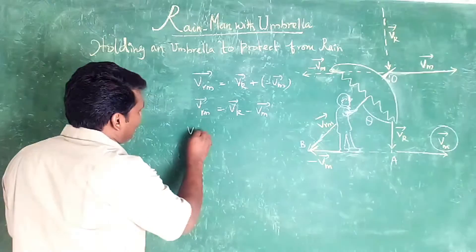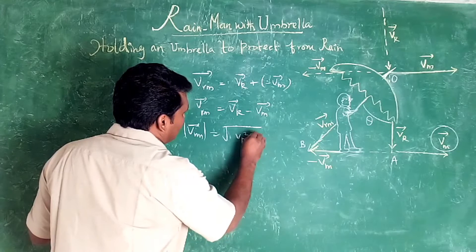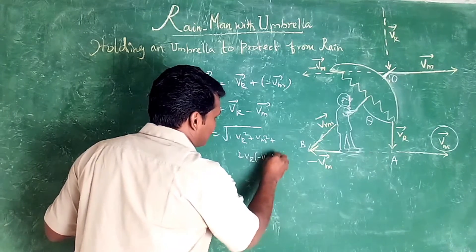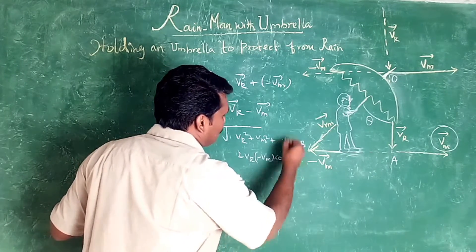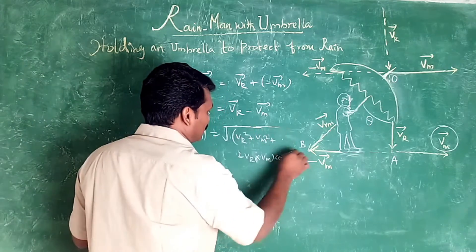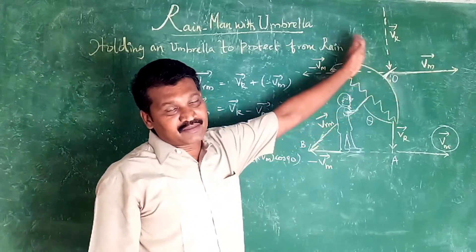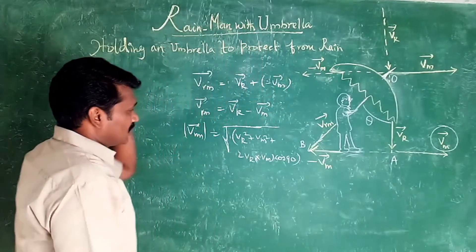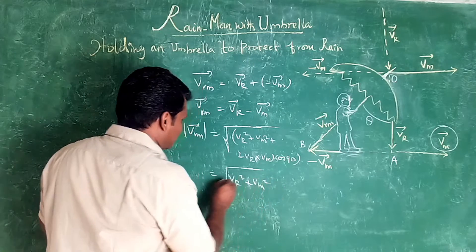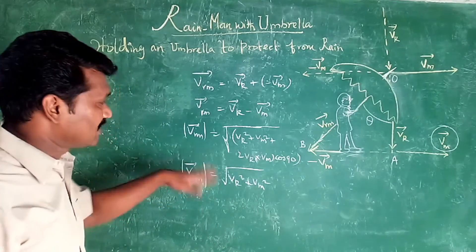So we have Vrm, Vrm equal to square root of Vr square plus Vm square plus 2 Vr minus Vm cos theta. When cos theta is zero, Vr square plus Vm square is the magnitude of velocity of rain with respect to man.